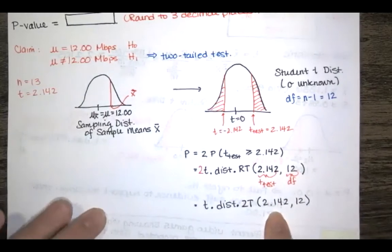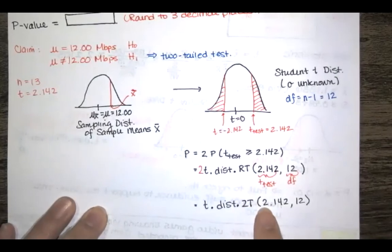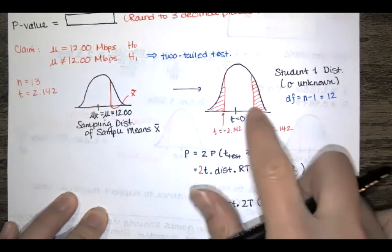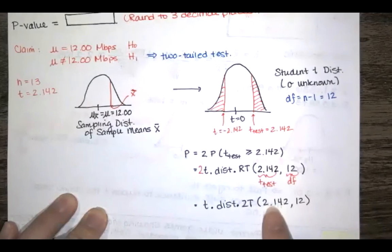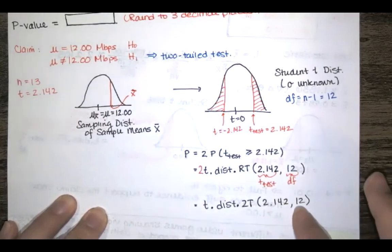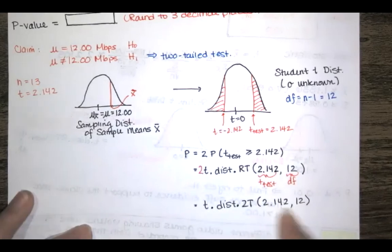And what this does is it recognizes whether this is a positive t value or negative t value and then it finds the area in the corresponding tail. So if this is positive it gives you area to the right. If the test statistic t is negative it gives you area to the left for that particular distribution which is dependent on the degrees of freedom. And then it doubles that area in the tails to get you this.